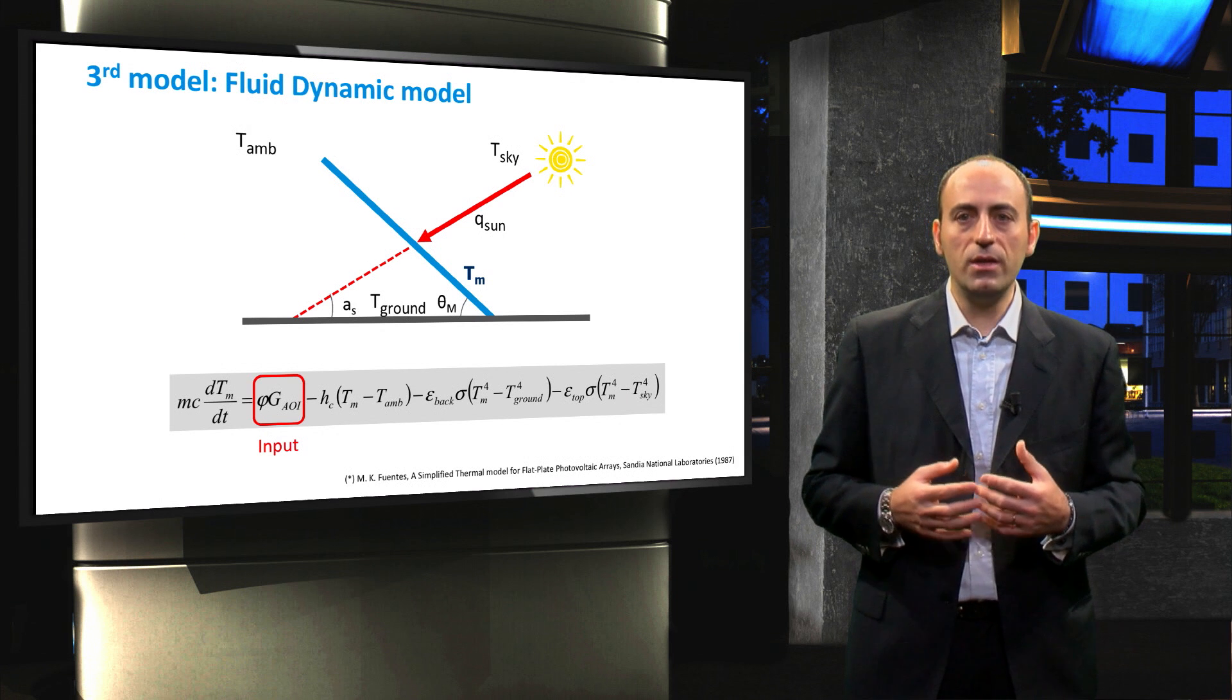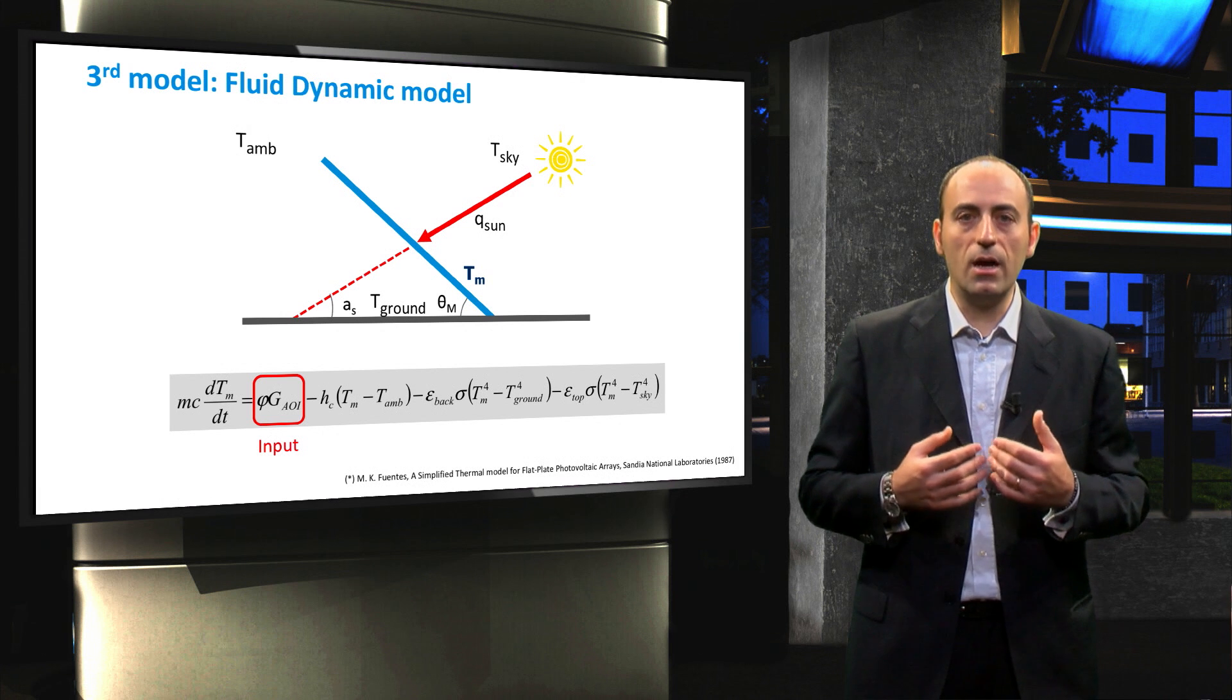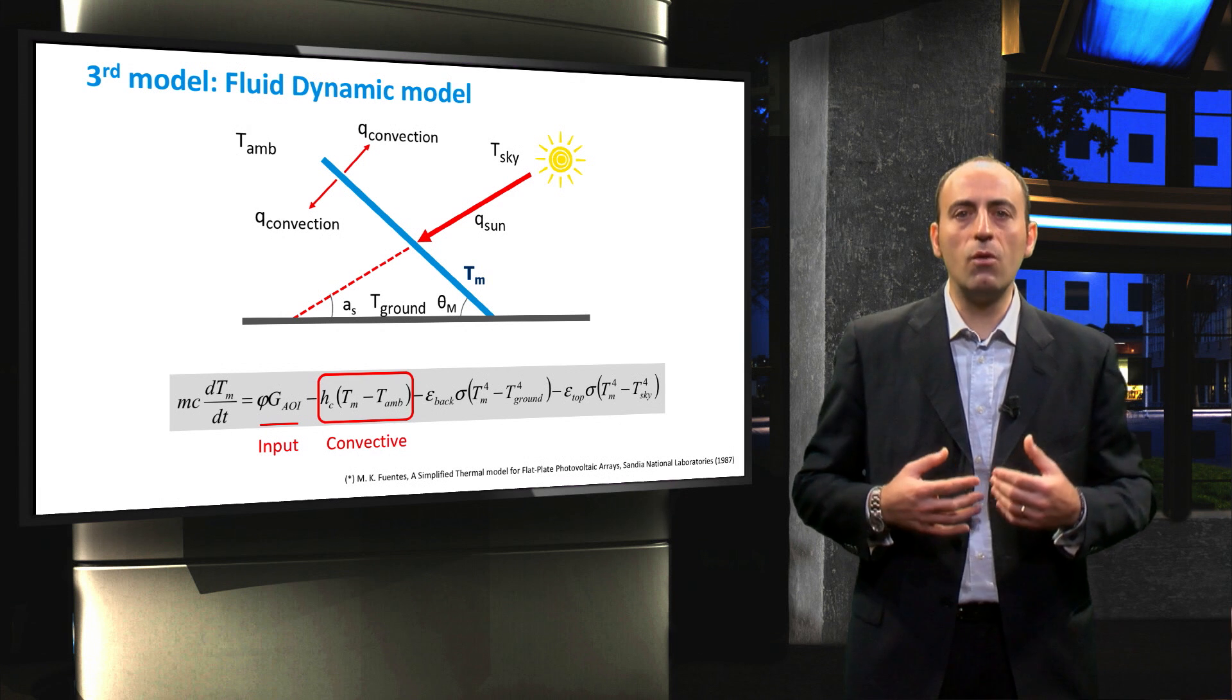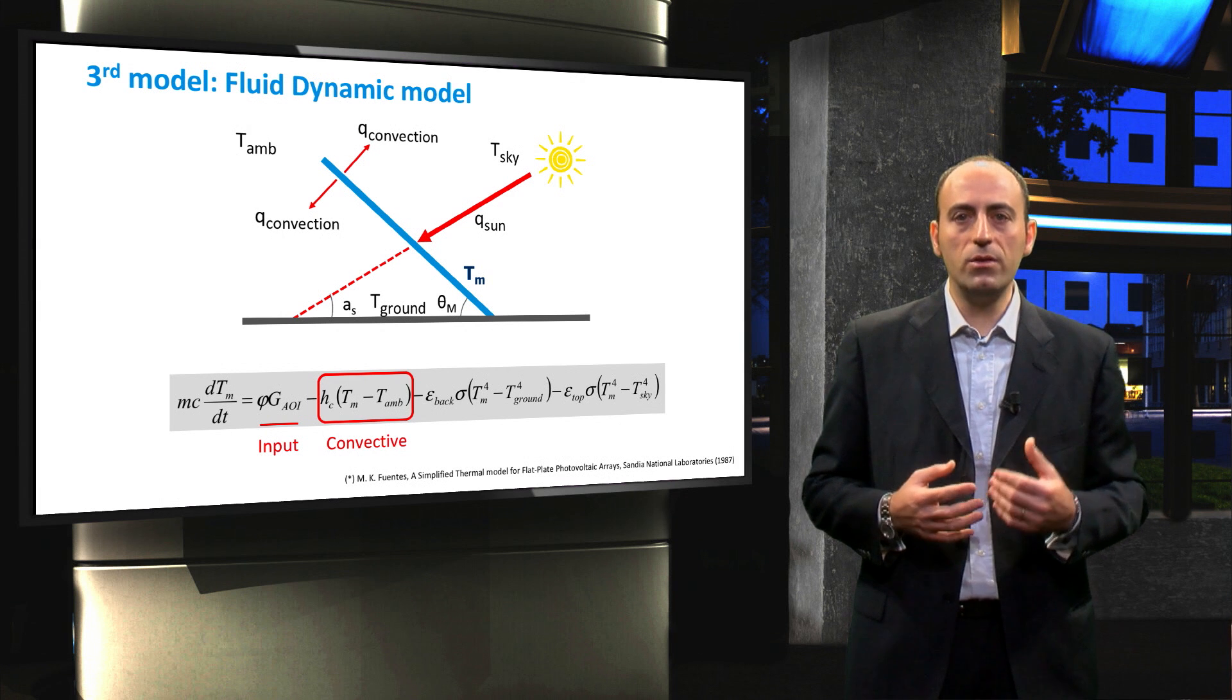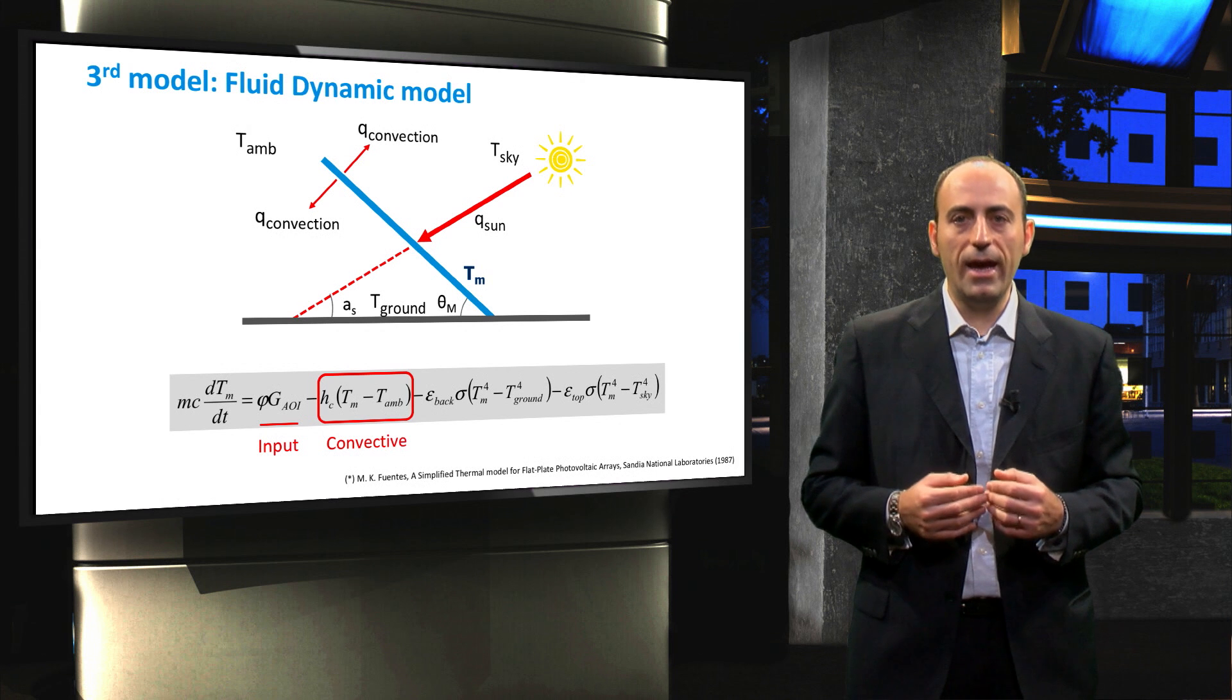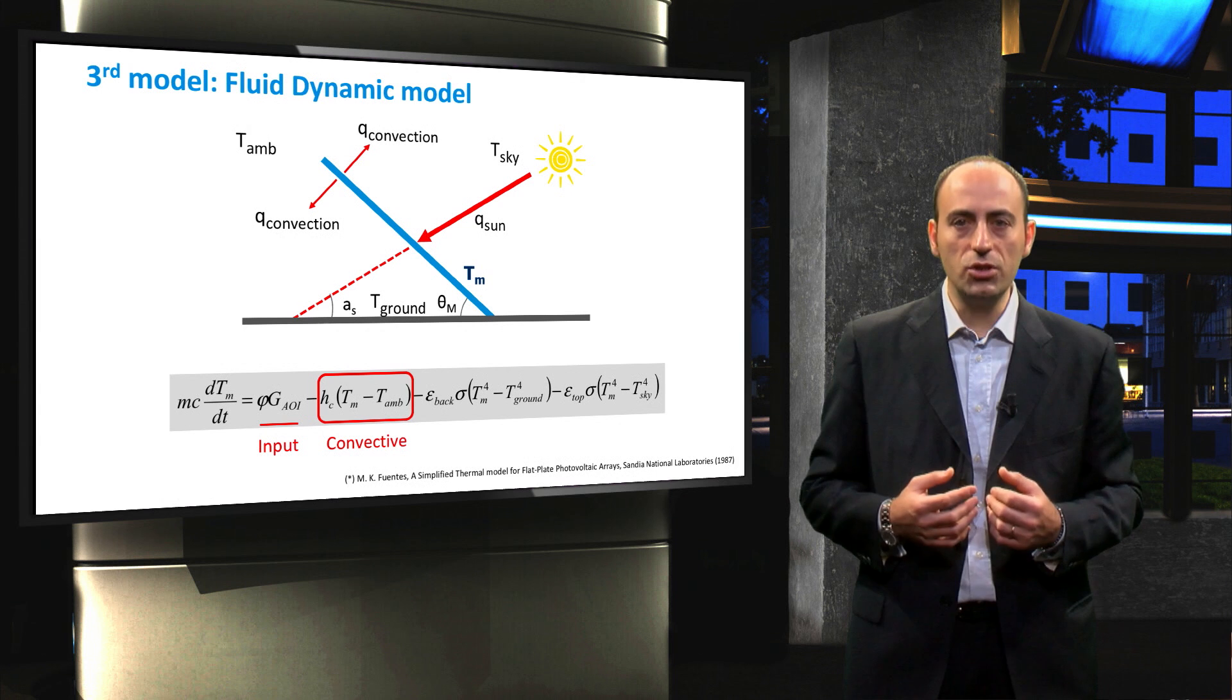First, we have the heat received from the sun, where phi is the absorptivity of the module. The second term expresses the convective heat exchange with the surrounding air from the front and the rear sides of the module. And HC denotes the overall convective heat transfer coefficient of the module.